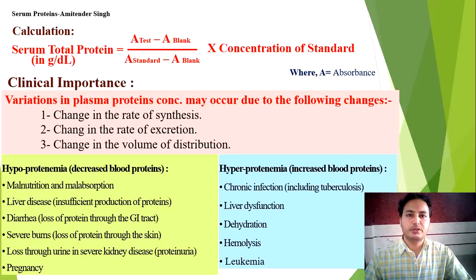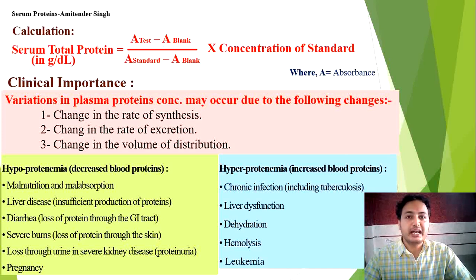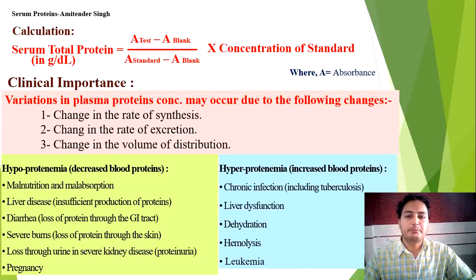We estimate total serum protein to detect and diagnose these conditions. Hypoproteinemia occurs in malnutrition, malabsorption — either due to inadequate intake or failure to absorb, excretion as in diarrhea — liver disease causing insufficient protein production, severe burns where proteins are lost, pregnancy, and proteinuria due to nephrotic syndrome. Hyperproteinemia occurs in chronic infection, liver dysfunction, dehydration, hemolysis, and leukemia.